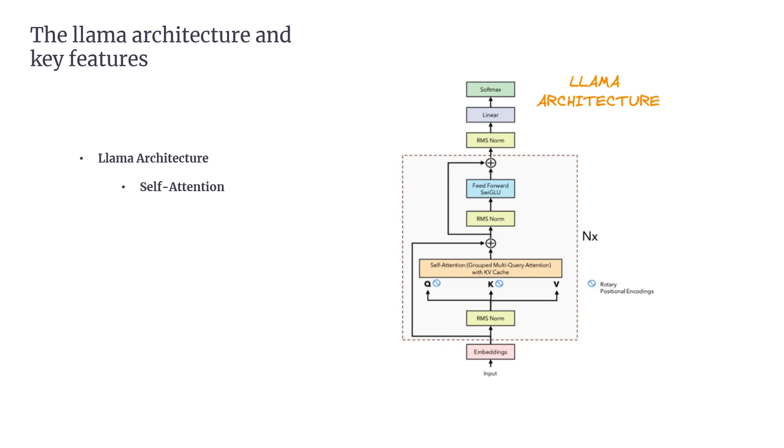LLAMA uses a modified version of multi-head attention called grouped multi-query attention (GQA). Instead of having each attention head with its own set of keys and values, GQA groups the queries and shares a single set of keys and values among the group. This balances speed and quality, making it more efficient than traditional multi-head attention.